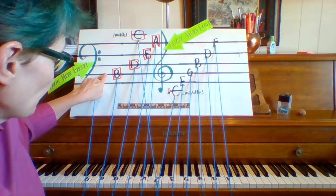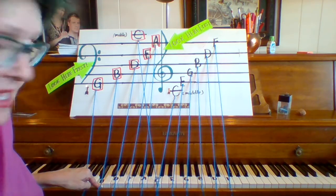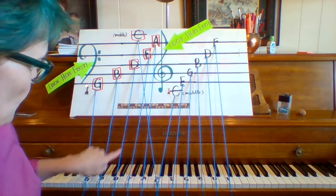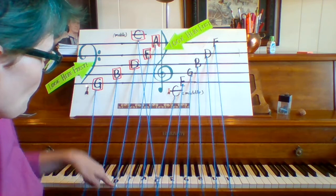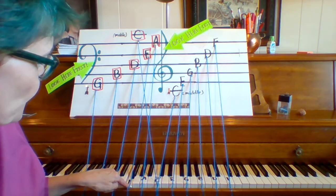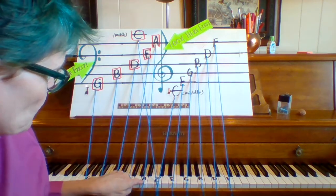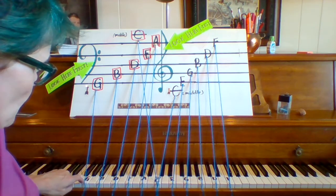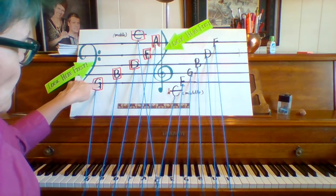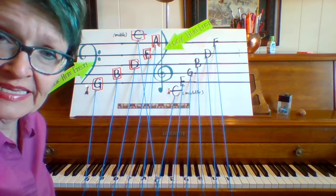We go up to line two. Boogies! B! Third line. Down! D! Fourth line. F! Fifth! Fifth line. Avenue! Grandma boogies down Fifth Avenue! G, B, D, F, A!